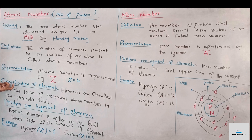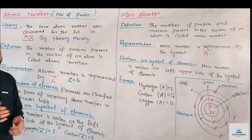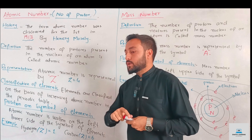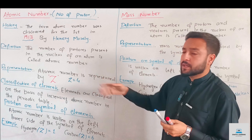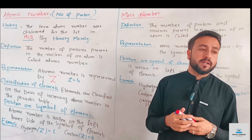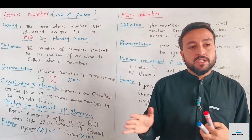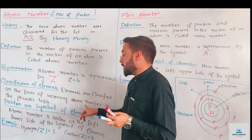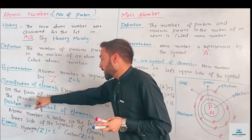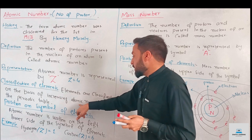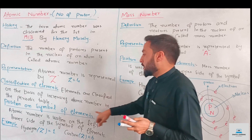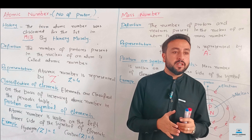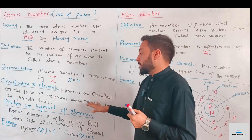Now we have a classification of the elements in the periodic table, so let's take a look at the periodic table. In the periodic table, elements are classified and arranged on the basis of increasing atomic number.